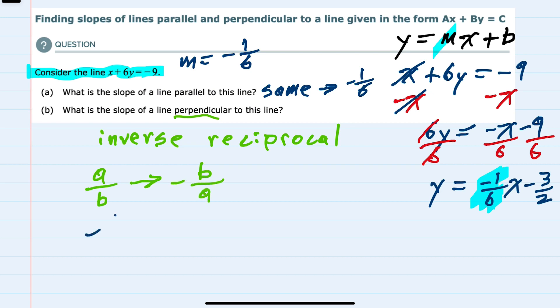So for negative 1/6 to find the inverse reciprocal, I would flip the one and the 6 and change the sign. So our perpendicular slope is just 6.